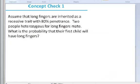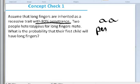Now, examining the Concept Check 1, we see an example of a recessive trait with high penetrance. So this problem is saying, assuming that longer fingers are inherited as a recessive trait, let's say here we're going to say the recessive allele for showing this phenotype is little a, little a. And it has a high penetrance. So I'll say here the penetrance is high, is 80%.